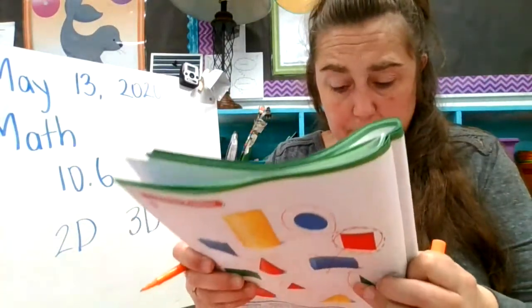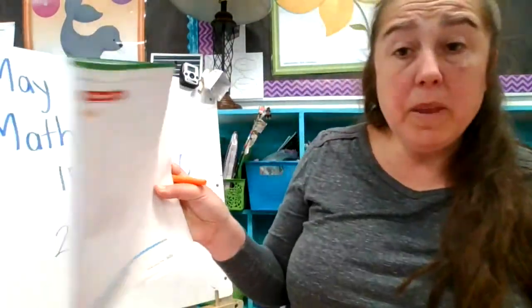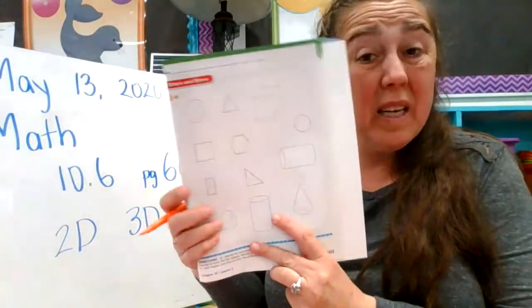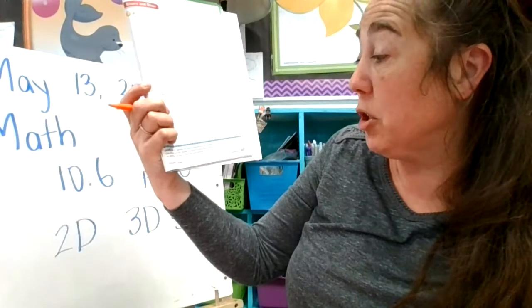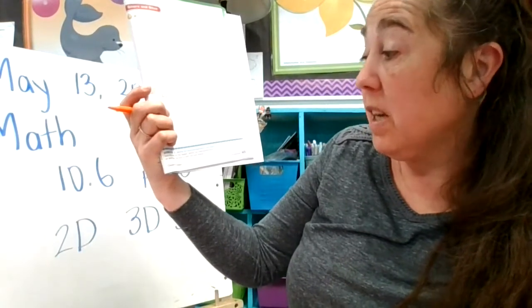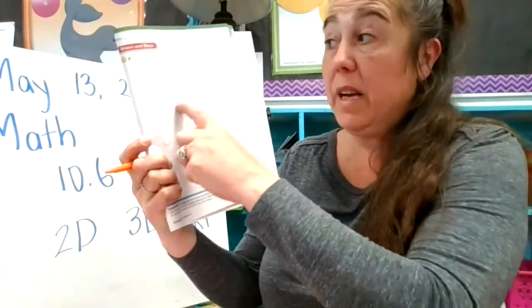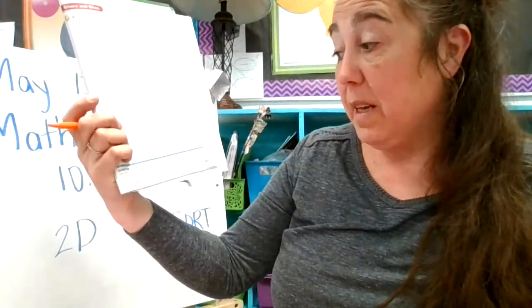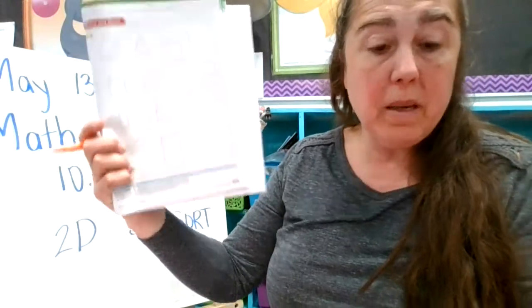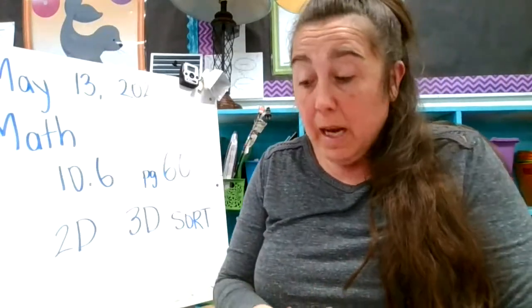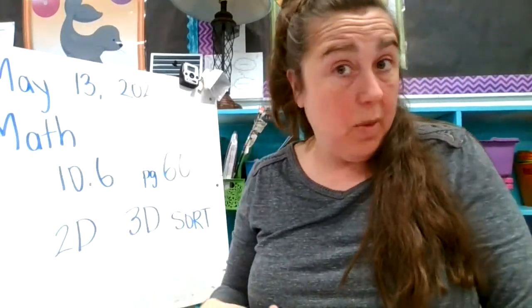So what they want you to do with this next one is the same thing again. They want you to color it in. So it says, identify two-dimensional or flat shapes. Use the red color to color in the two-dimensional shapes, and use a blue to color in the three-dimensional shapes. Here's what I'd like you to do. You can do all that. That's great.